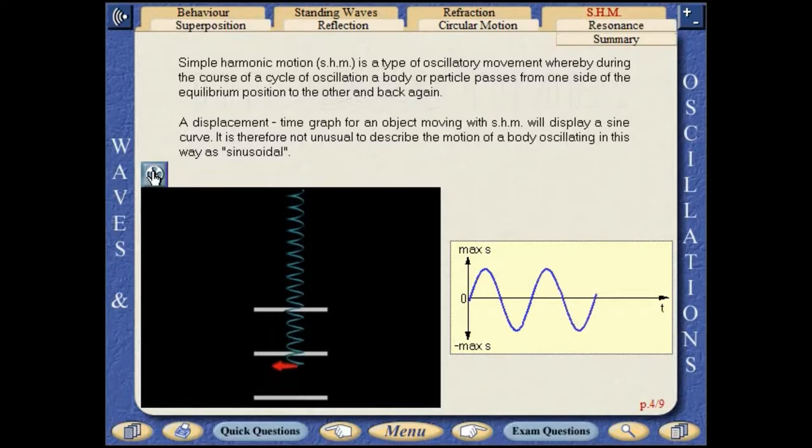A displacement time graph for an object moving with SHM will display a sine curve. It is therefore not unusual to describe the motion of a body oscillating in this way as sinusoidal.